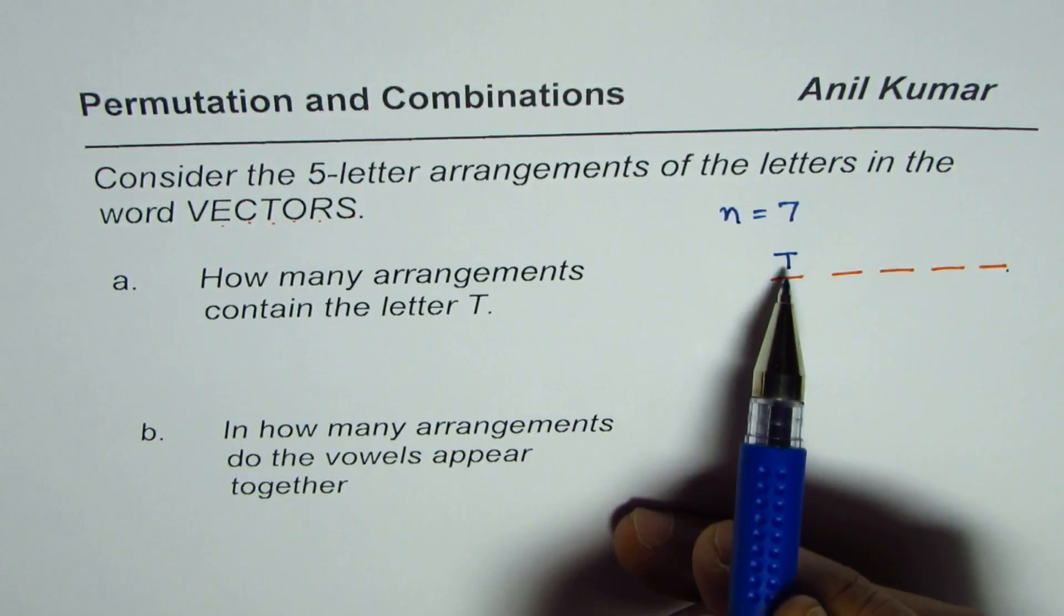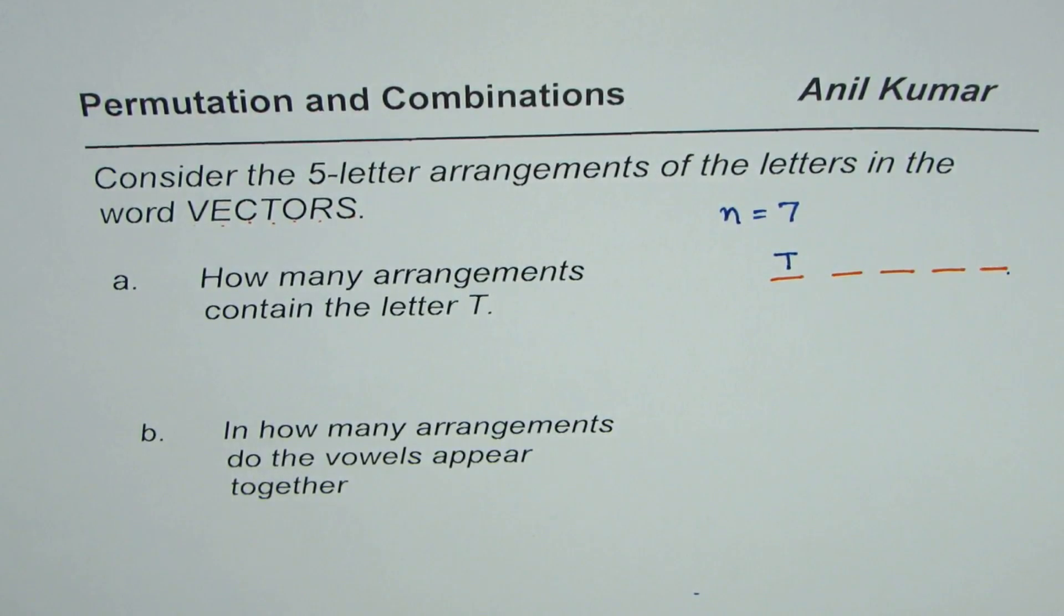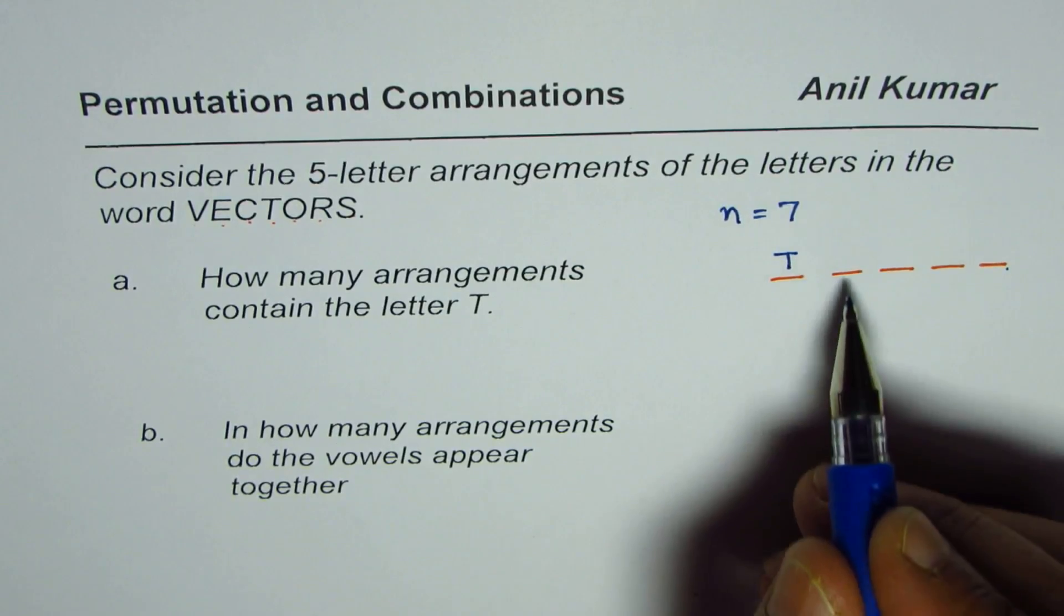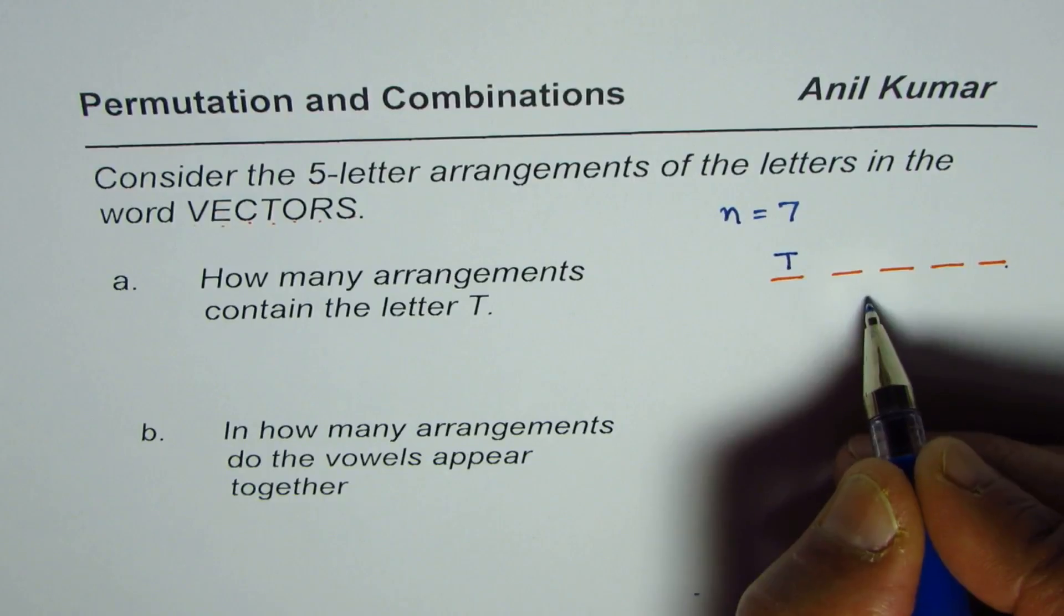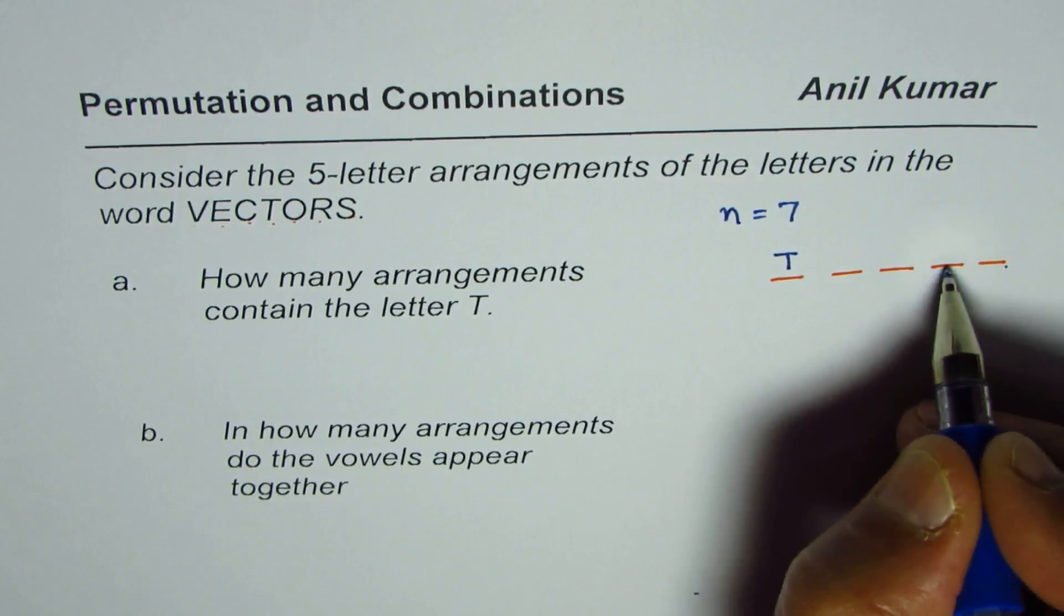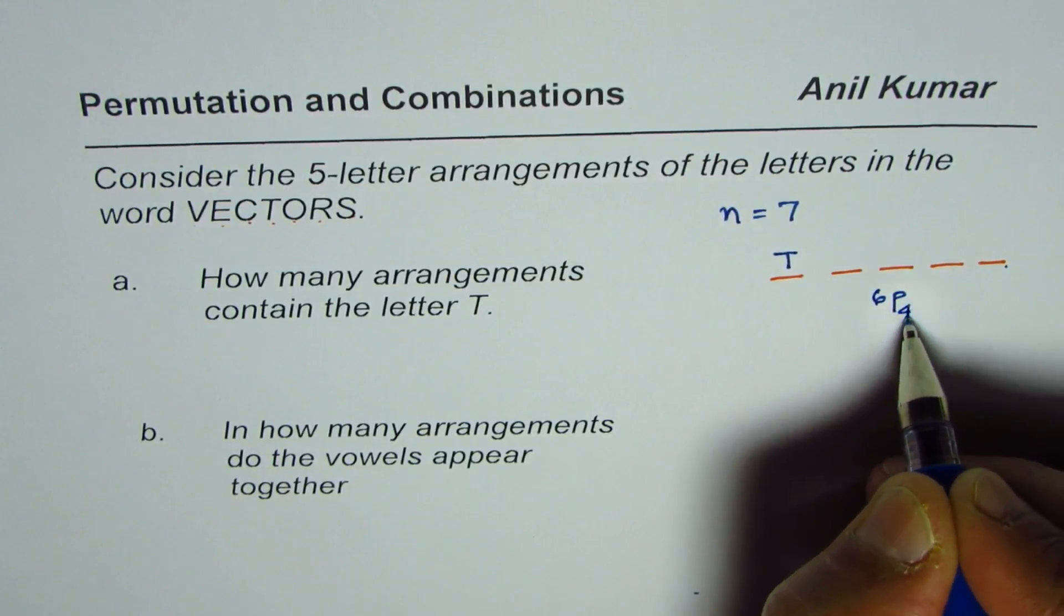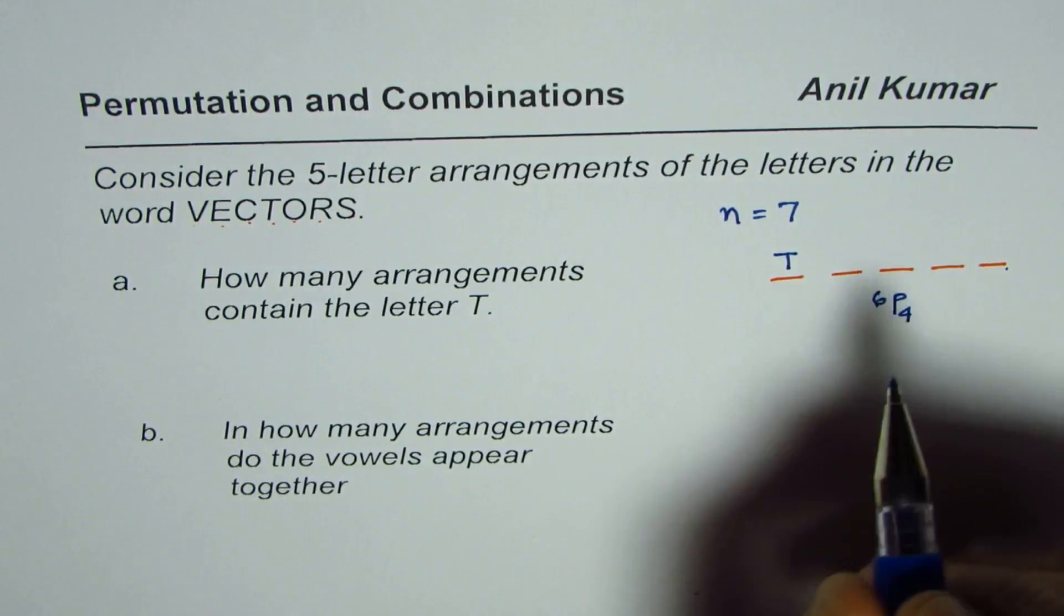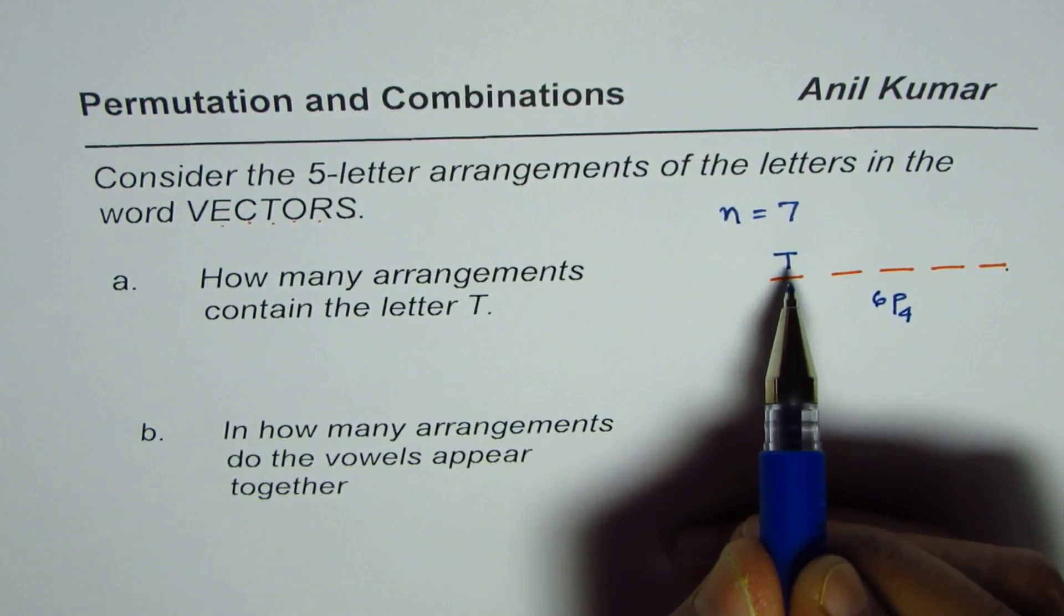Out of seven, we have already taken one, so we are left with six. With six letters we're trying to fill up these four positions. So it is 6P4. That's six P four, the number of ways.